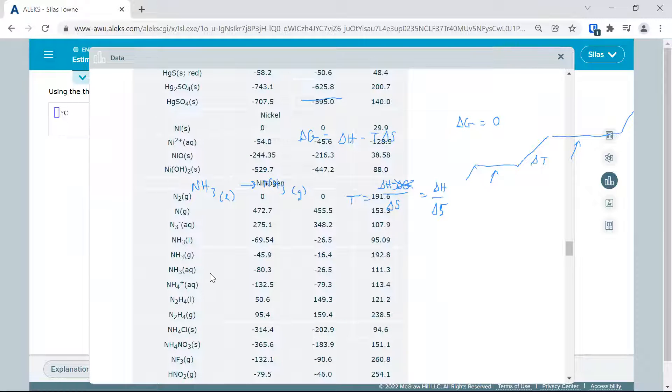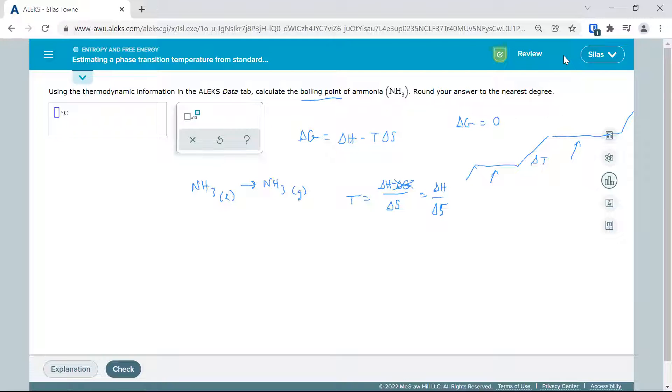Here we go. And we've got a bunch of them, but what we're looking for is the liquid state and the gas state. Here we have the entropy. Notice the gas entropy is higher, which is expected. And then we have these. So we're going to write these down.